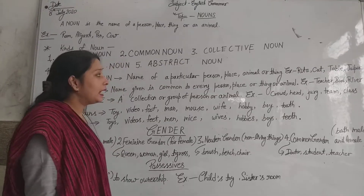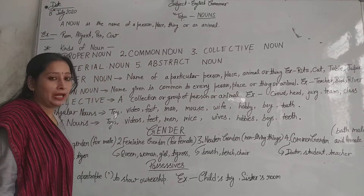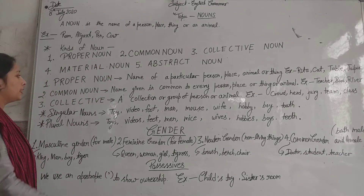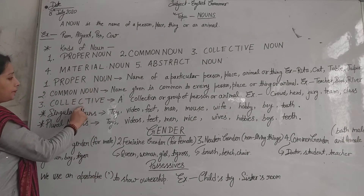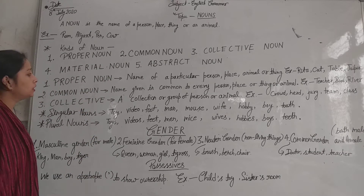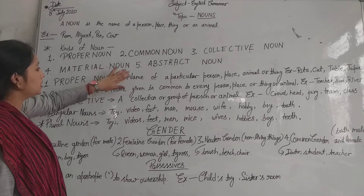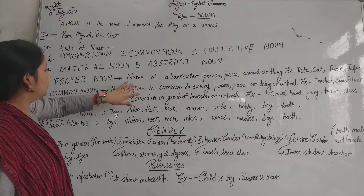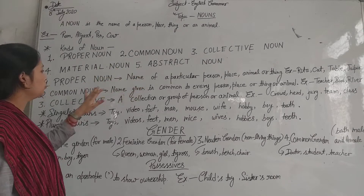But in this book, you will learn only 3 kinds of nouns: proper nouns, common nouns, and collective nouns. So let's look at proper nouns first.